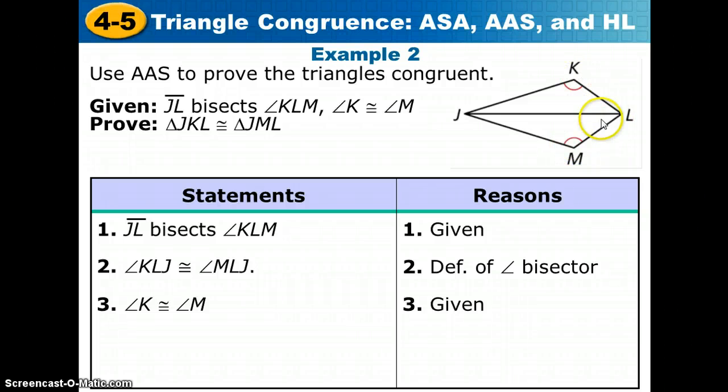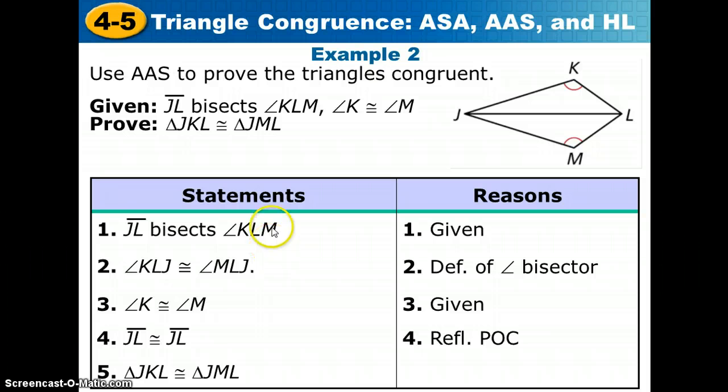So I've shown angle, angle congruence in steps two and three. And we need to say the JL is congruent to itself by the reflexive property. Since both triangles have JL as a side, they share that side, we can say this. So we've shown angle, angle, side, so that's enough to say that triangle JKL is congruent to triangle JML by angle, angle, side, steps two, three, and four.